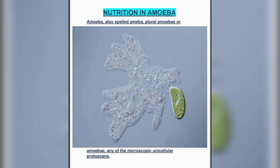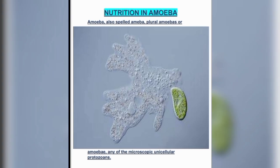Amoeba is a unicellular organism, so we can see it only through a microscope. It is called a protozoan. Protozoan refers to organisms that freely float on water bodies. These organisms include amoeba and paramecium, and both are placed in the Protista kingdom.